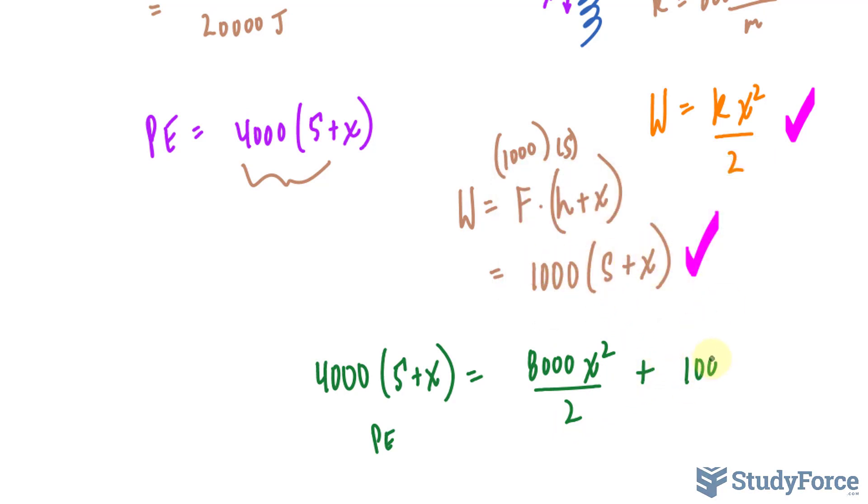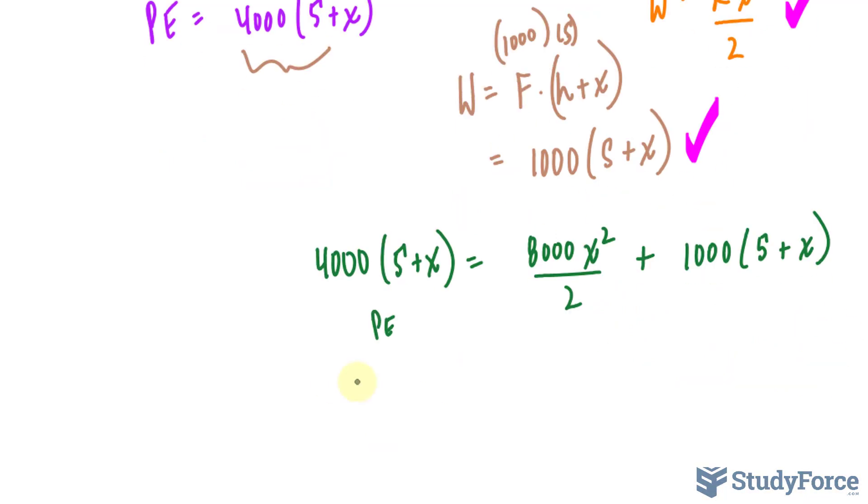To simplify this expression, we will end up with 20,000—notice that I'm multiplying 4,000 into 5 and 4,000 into x, so I have 4,000x here—is equal to 4,000x². I've simplified 8,000 divided by 2, and expanding that, we have 5,000 plus 1,000x.